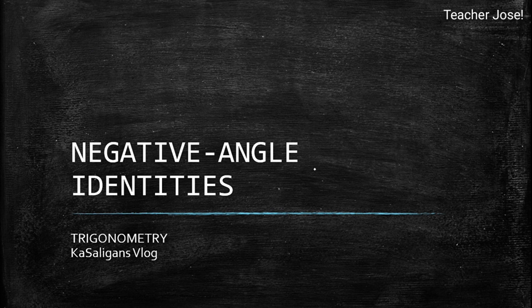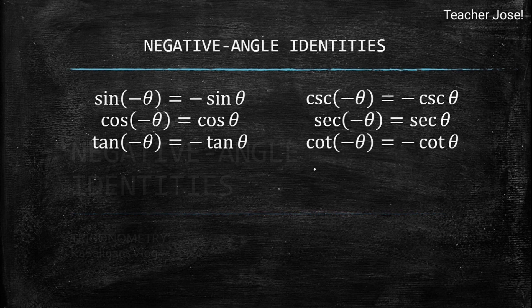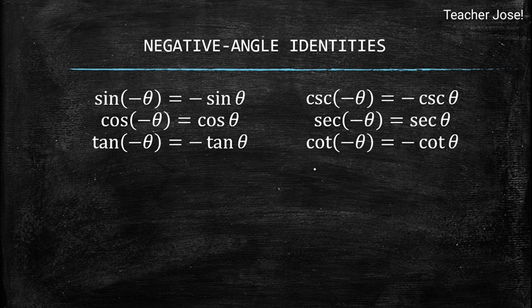Good day everyone, welcome back to my YouTube channel. Today we'll be talking about negative angle identities in trigonometry. So we have the negative angle identity: sine negative theta is equal to negative sine theta, cosine negative theta is equal to cosine theta, and tangent negative theta is equal to negative tangent theta. Take note of these because they are very useful as we go further with this subject.